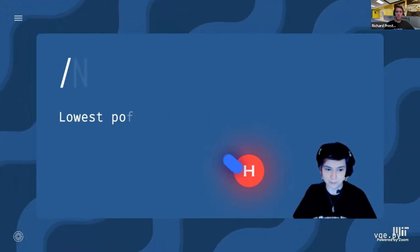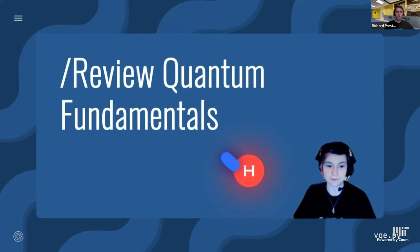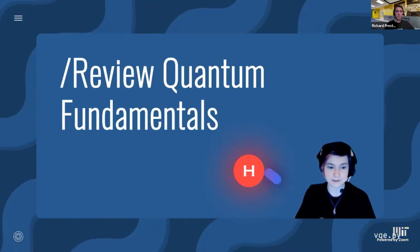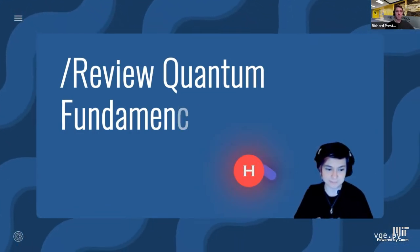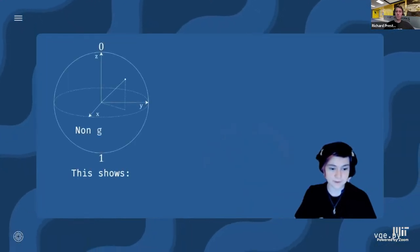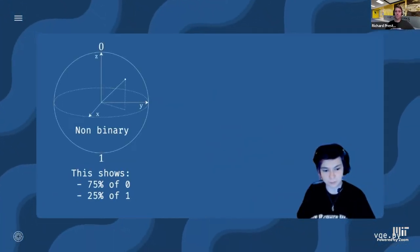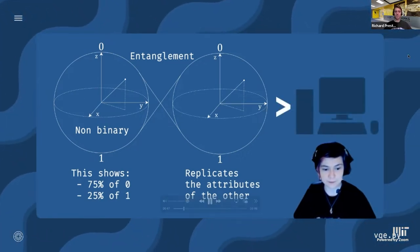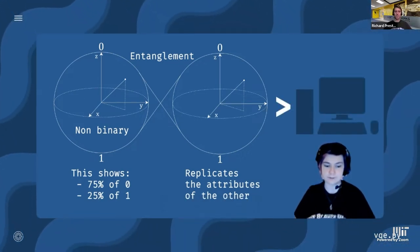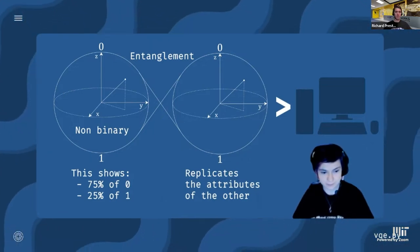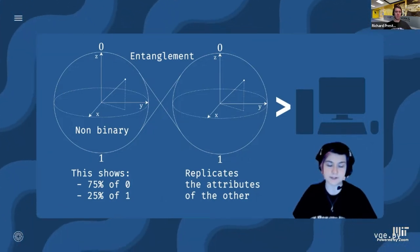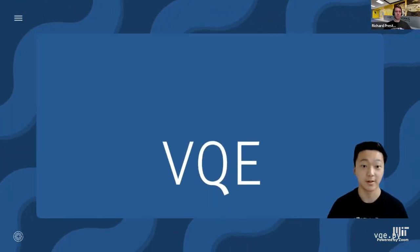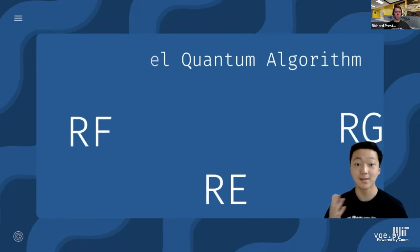Before we can go into the algorithm, we need to review the basics of what a quantum computer is and how it can expedite the process of finding the lowest possible energy state. What you mainly need to know is that a qubit can be in a state between 0 and 1, that qubits can be entangled, and that this makes quantum computers faster than normal computers at certain tasks. The variational quantum eigensolver, or VQE, is one of these tasks. VQE is an example of a variational quantum algorithm — in plain English, it has both a classical and quantum part.